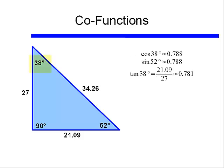If we look at the tangent of 38 degrees, the tangent equals the opposite over the adjacent, or 21.09 divided by 27, which is approximately equal to 0.781.